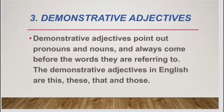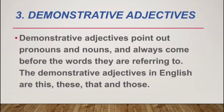We are moving to our third adjective: demonstrative adjective. Demonstrative adjectives point to pronouns and nouns, and always come before the word they are referring to. Demonstrative adjectives in English are: this, these, that, and those. The demonstrative adjective always points out noun and pronoun, and before using noun or pronoun it gives its own word as a starting word, then continues with the noun or pronoun in the sentence. For example: this is my friend. Those flowers are beautiful.